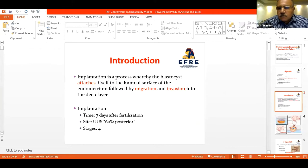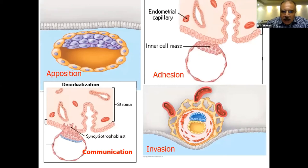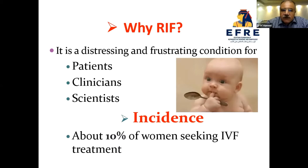Implantation is a process whereby the embryo attaches itself to the luminal surface of the endometrium, followed by migration and invasion. It occurs about 10 days after fertilization, usually in the upper uterine segment, and passes through four stages: opposition, adhesion, communication, and invasion.